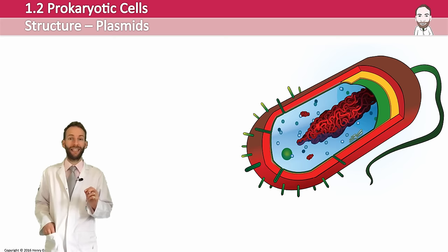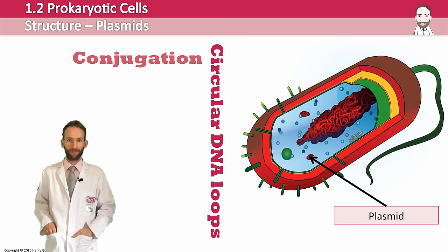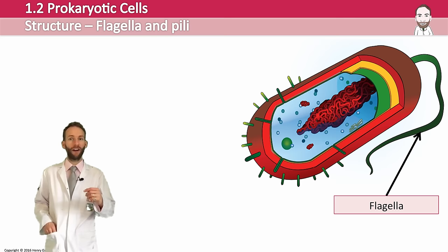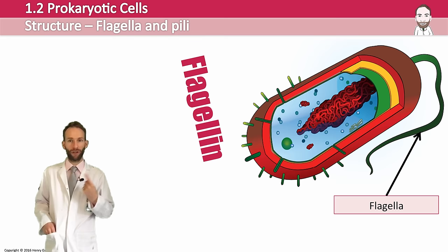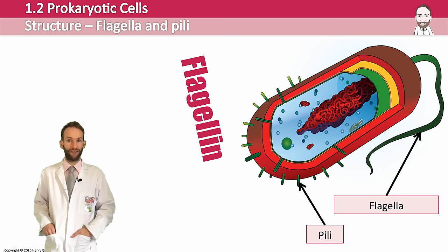Some prokaryotic cells also have small circular loops of DNA called plasmids. Plasmids are very interesting — they can actually be transferred between bacteria in a process called conjugation, and they code for a specific trait. Some bacteria have flagella for movement, almost like a little tail that comes out the back of the bacteria. It's made from protein fibres called flagellin, which are spun around like a motor — a spiral protein fibre spun by a little motor protein, which helps with movement. Other bacteria also have little things called pili around the outside, used to help bacteria reproduce and communicate through conjugation, where they link together and exchange small plasmids.